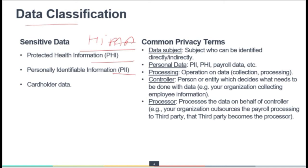Cardholder data is a specific subset of PII related to the holder of a credit card or debit card. This data includes information such as the primary account number (PAN), social security codes, expiry date, and any other information that can be used to identify a particular individual cardholder. Cardholder data is governed by PCI DSS, while PII has different regulations depending on the country — for example, GDPR for the European Union.